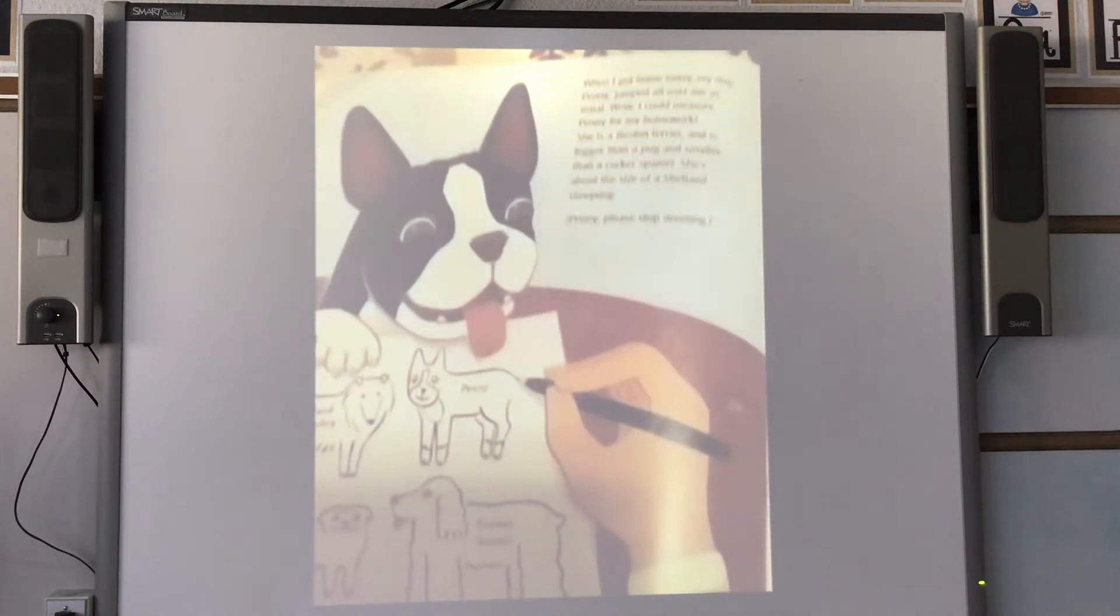When I got home today, my dog Penny jumped all over me as usual. Wow, I could measure Penny for my homework. She's a Boston Terrier and is bigger than a pug and smaller than a Cocker Spaniel. She's about the size of a Shetland sheepdog. Penny, please stop drooling.